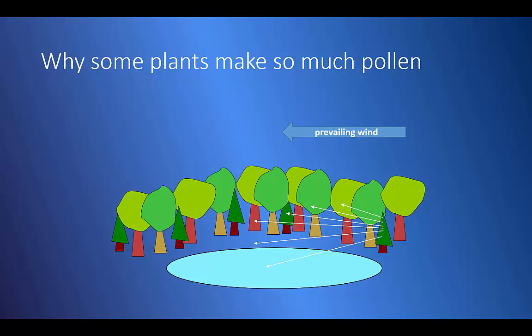But each individual pollen grain faces terrible odds, especially if it's carried by the wind instead of by bees or other animals. Most of that pollen is going to end up on the ground, stuck to leaves, or carried to some other kind of plant. Very few pollen grains are going to make it to the flower of a plant of their own species.